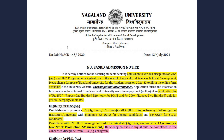If you want to enroll in the MSc Agriculture and PhD program, you can do an online form fill up by clicking the link provided. The application fee is $150 for SC/ST candidates and $200 for the general category.